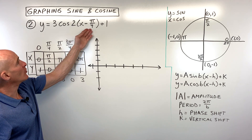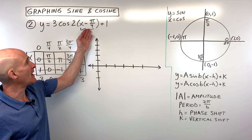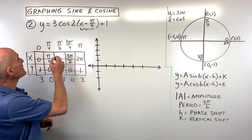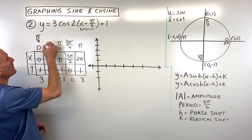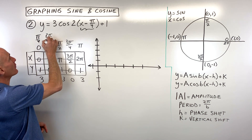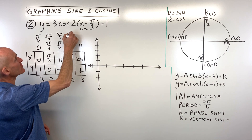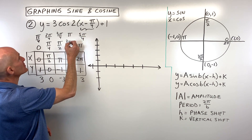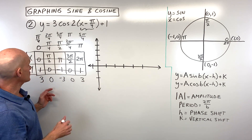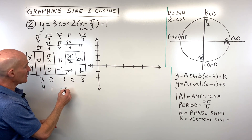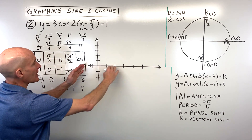Cross out the old y-values. Now let's look at the phase shift: x minus π/4 — the term grouped with x has the opposite effect, so minus π/4 actually shifts the graph right π/4. We add π/4 to each x-value: 0+π/4 = π/4, π/4+π/4 = 2π/4, 3π/4, 4π/4 = π, 5π/4. Cross out old x-values. Lastly, plus one shifts everything up one, so we add one to each y-coordinate.